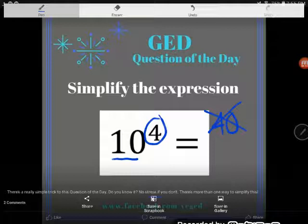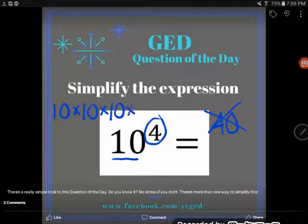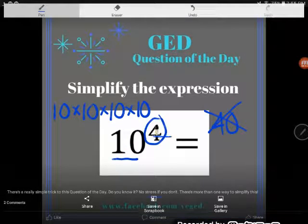What does 10 to the fourth power mean? Well, when you have an exponent, it means the number is repeatedly multiplying. This could be rewritten as 10 times 10 times 10 times 10, or the number 10 multiplying by itself four times.